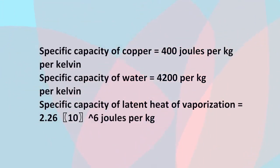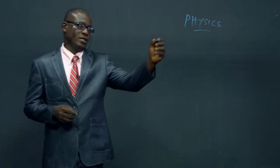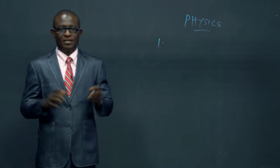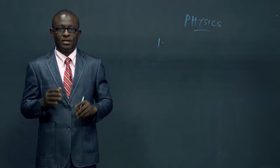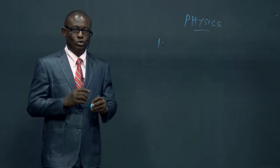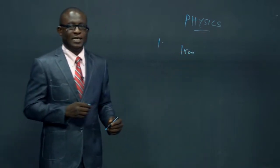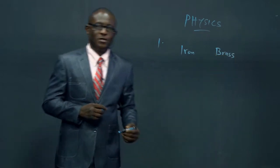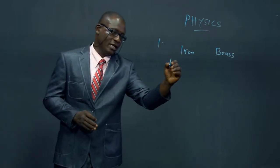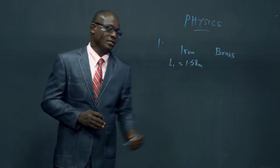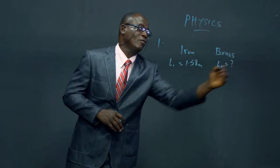Let's take these questions one after the other. Question 1 talks about the linear expansivity of two different metals — an iron rod and a brass rod. The given quantities are: the original length of the iron rod is 1.58 meters at 0 degrees Celsius. The original length of the brass rod is not given in the question.